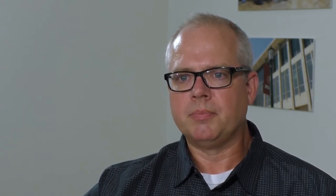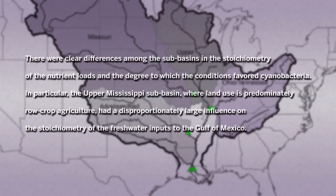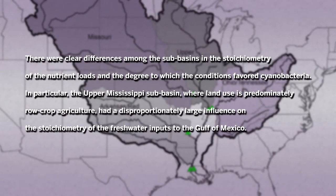Nitrogen and phosphorus loading can shift nutrient ratios to conditions that favor cyanobacteria over diatoms, and often this results in harmful algal blooms. Some key points from the paper include: first, there were clear differences among the sub-basins in the stoichiometry of the nutrient loads and the degree to which conditions favored cyanobacteria.